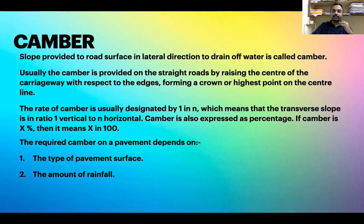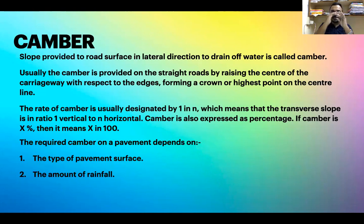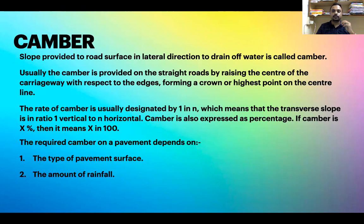Camber is the cross slope provided on the road — it is not the slope of the region but the slope of the road. The middle part of the road is slightly raised relative to the edges so that water can move along the road and reach the drains. This phenomenon of providing this slope is known as camber, and its purpose is to drain off water.